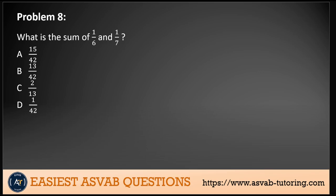Problem 8: What is the sum of 1/6 and 1/7? All we need to do is add the fractions together. We have 1/6 plus 1/7. We need to find the common denominator, which is 42. That gives us 7/42 plus 6/42. We simplify by adding them together to get 13/42. That's our answer.